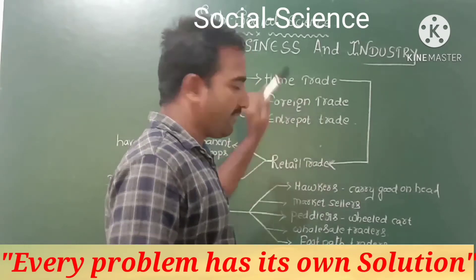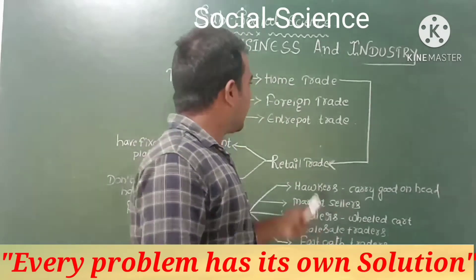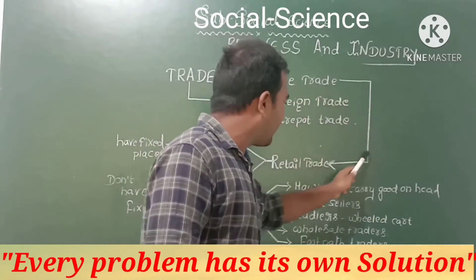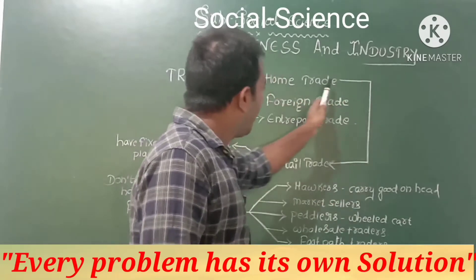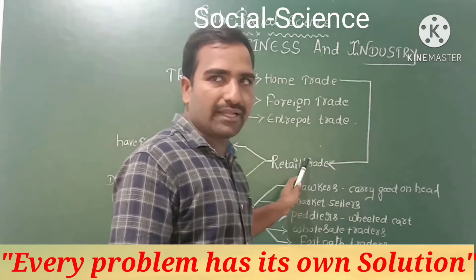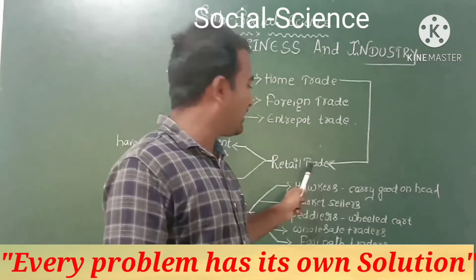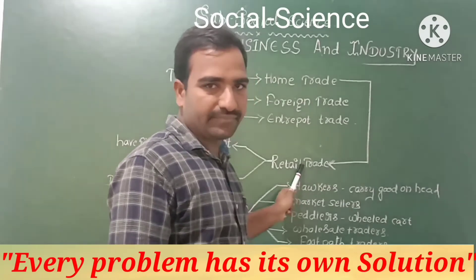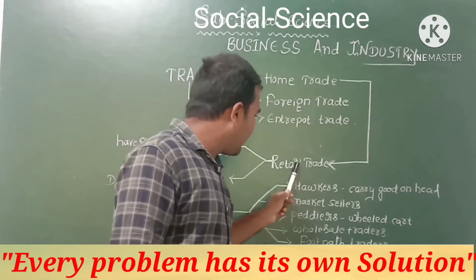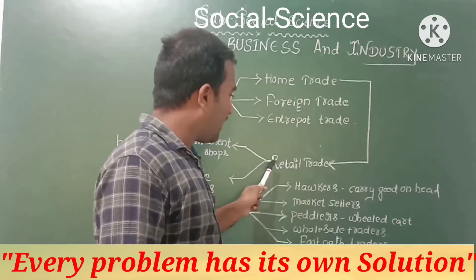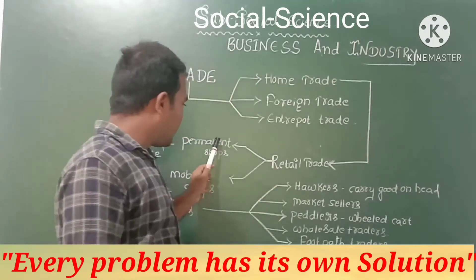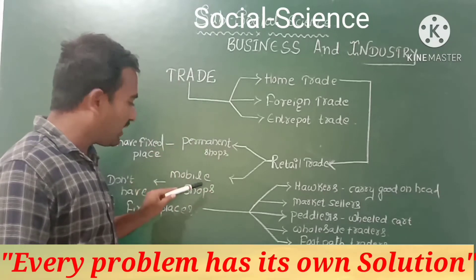Moving to the next concept: home trade is further categorized into another form, which is called retail trade. Retail trade again has two forms — one is permanent shops and another one is mobile shops.